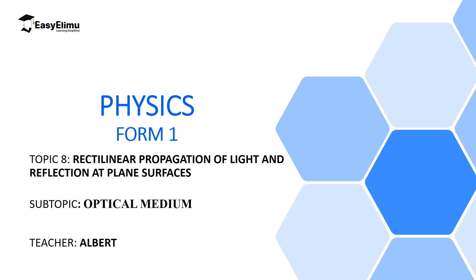In this lesson, we are going to discuss a medium in which light travels, which we call the optical medium. Later, we will look at experiments which we can perform to prove that light has the property of linear propagation — meaning that light travels in a straight line. My name is Albert.